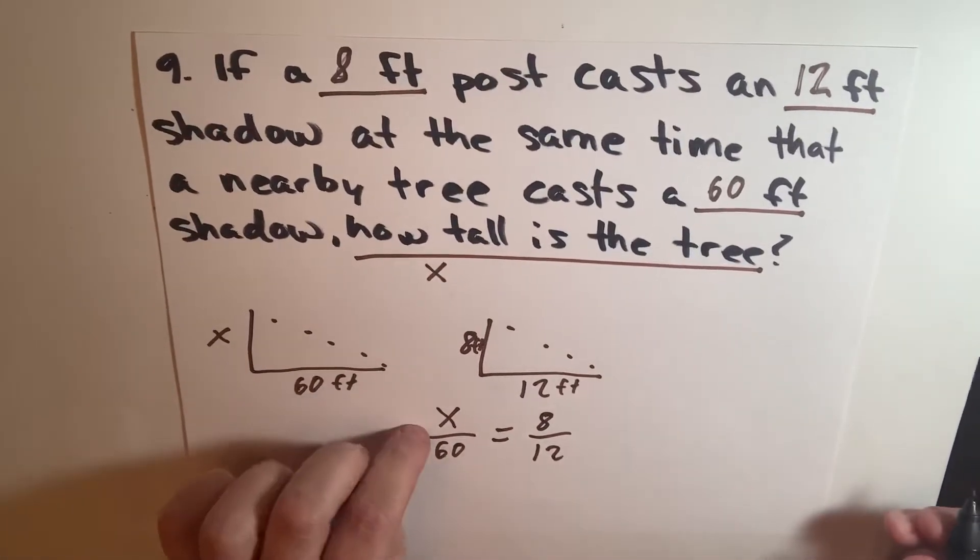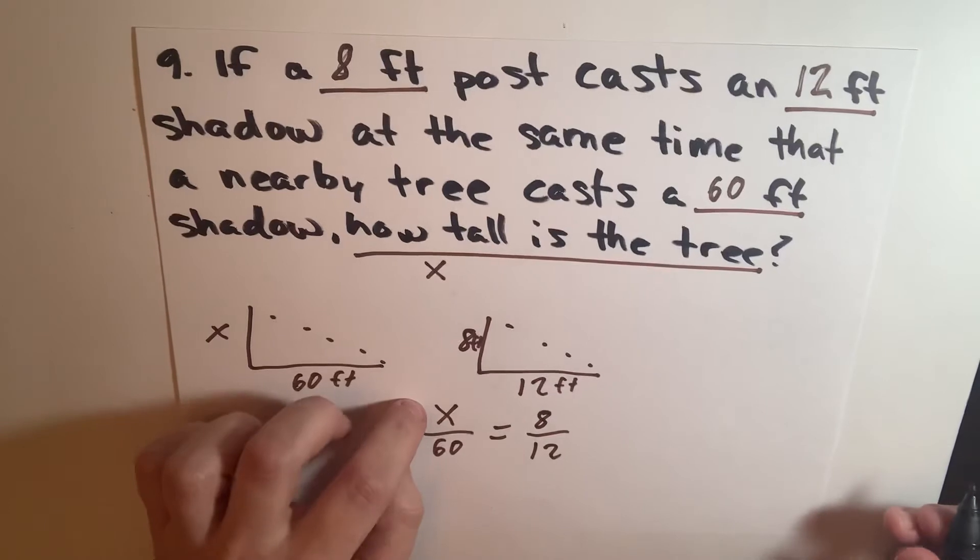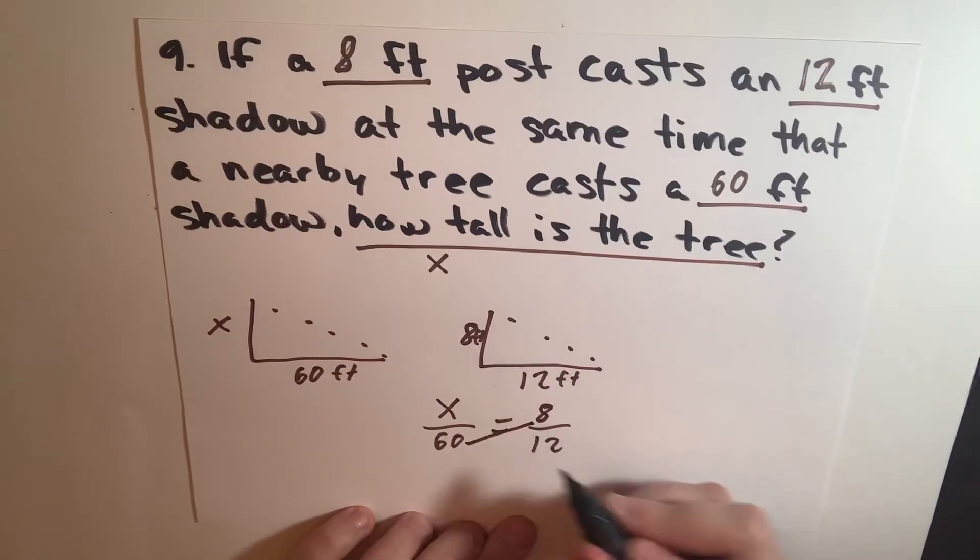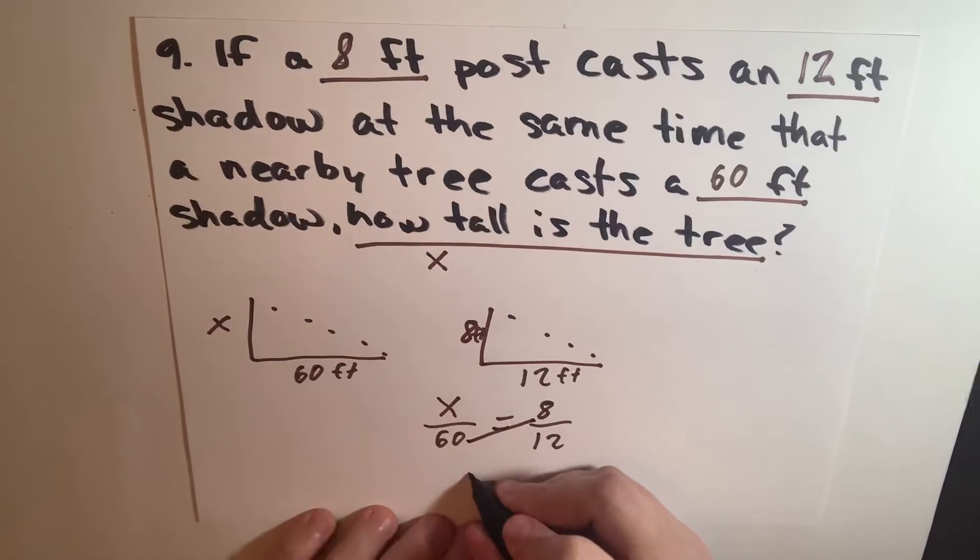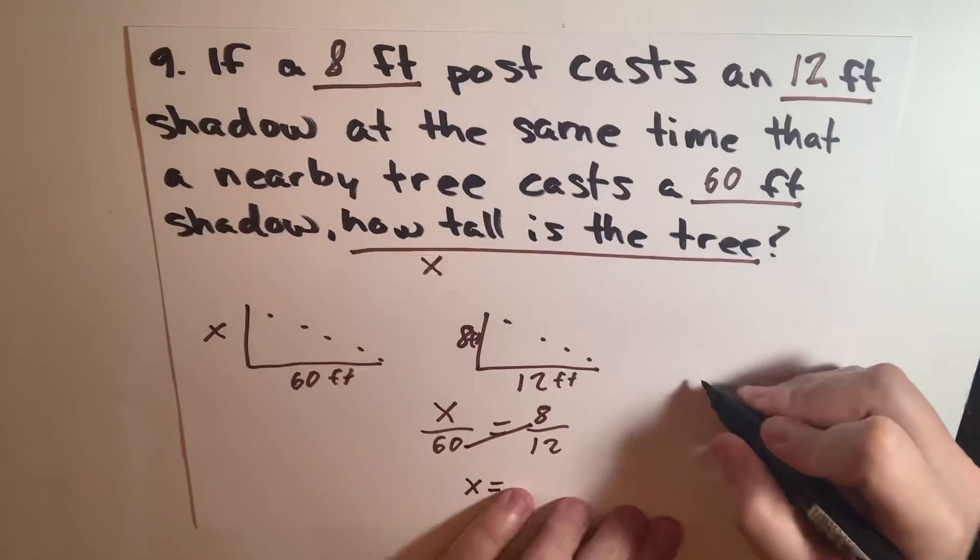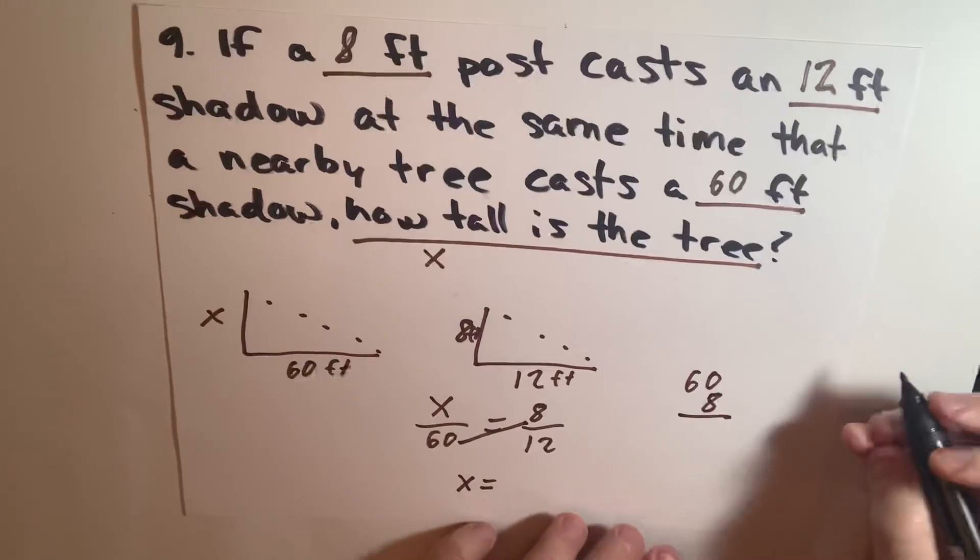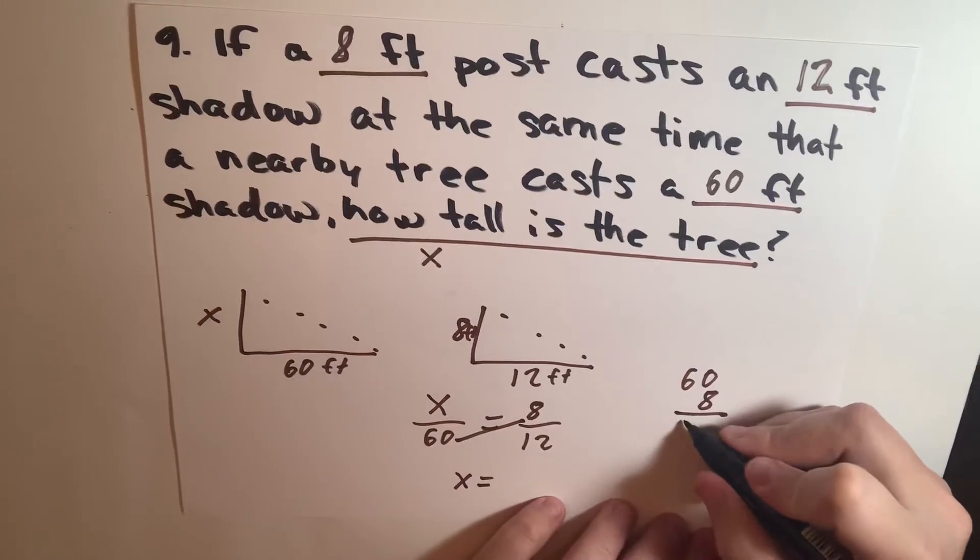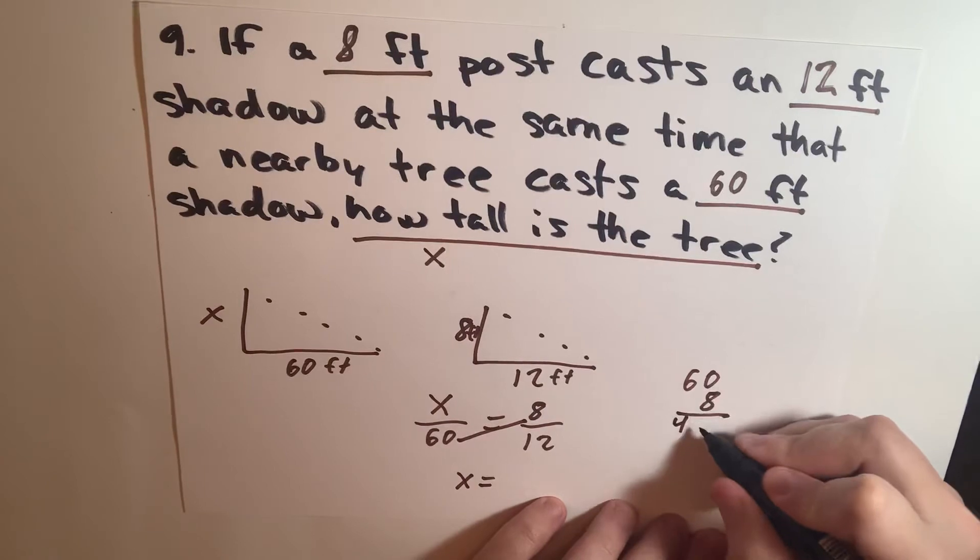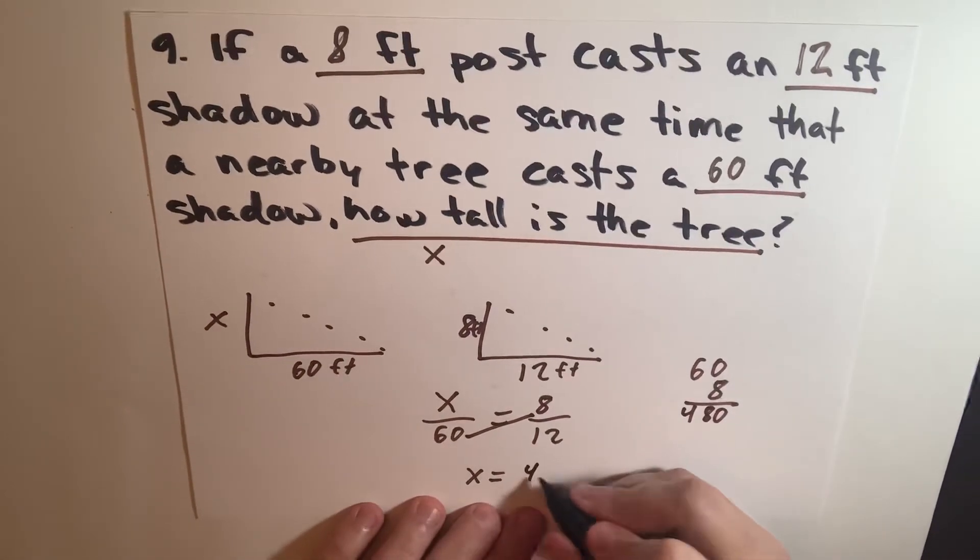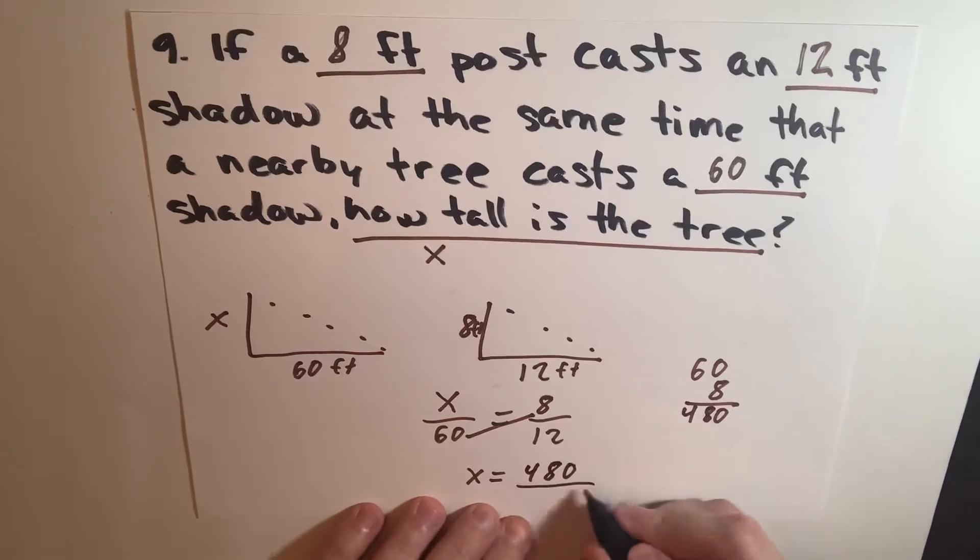And when you have a fraction like this with a variable, you want to isolate the variable. And how we're going to do it in this way is we're going to cross multiply. So it's going to be x equals 60 times 8, which is 480.